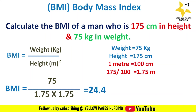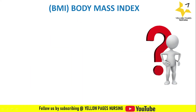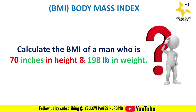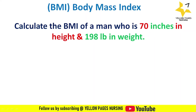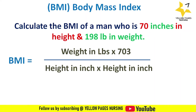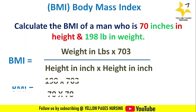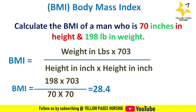Next example: calculate the body mass index of a man who is 70 inches in height and 198 pounds in weight. Here we use the pounds and inches formula. BMI equals 198 multiplied by 703, divided by 70 multiplied by 70, which gives 28.4. So the body mass index is 28.4, and as per the table, this man falls under the overweight category.